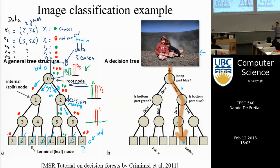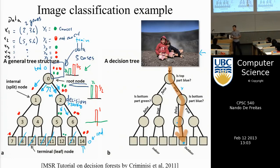Student question: when going through this tree, do all points go 100% one way, or can there be some probability of a fraction going in each direction? The answer is addressed on the next slide.